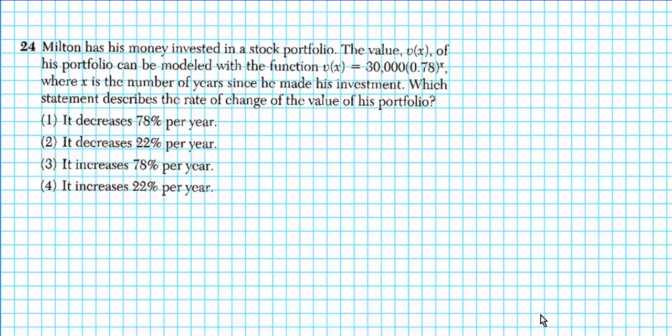Let's take a look at number 24. It says, Milton has his money invested in a stock portfolio. The value, v(x), of his portfolio can be modeled with a function, v(x) = 30,000(0.78)^x, where x is the number of years since he has made his investment. Which statement describes the rate of the value of his portfolio?